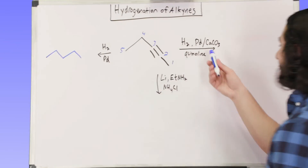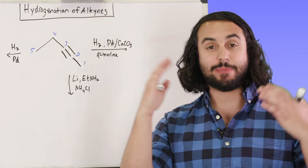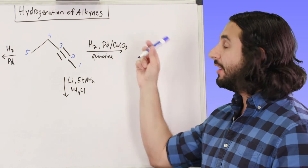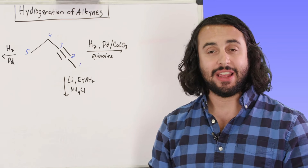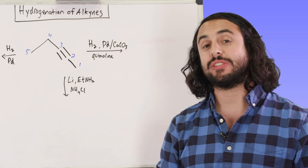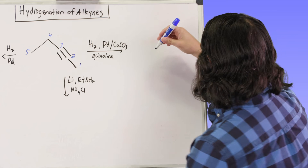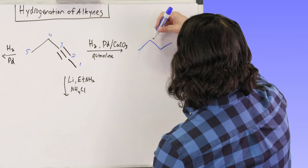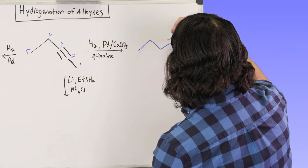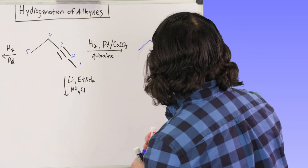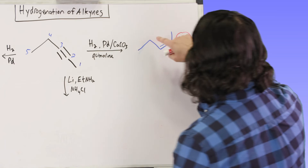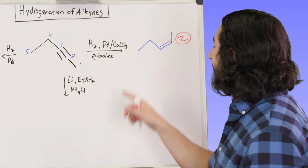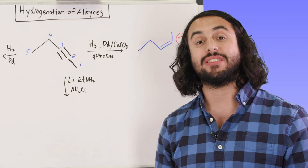Now looking at the next condition, we need to recognize that this is Lindlar's catalyst — or you might just see Lindlar. We should associate in our minds that Lindlar's catalyst always stops at the alkene and specifically stops at the Z alkene. So we're going to get a five-carbon alkene. It's going to be a Z alkene, meaning we need to have these alkyl groups projecting in the same direction because Z — same side. That is a five-carbon Z alkene with the correct stereochemistry at that position.